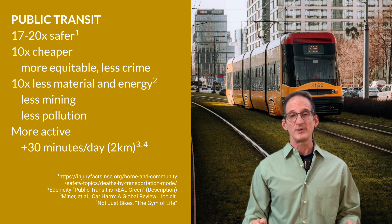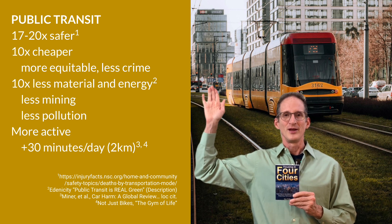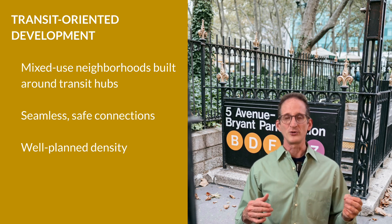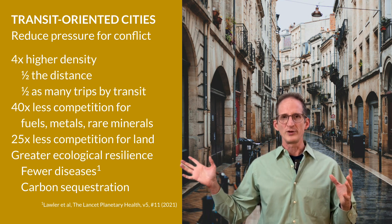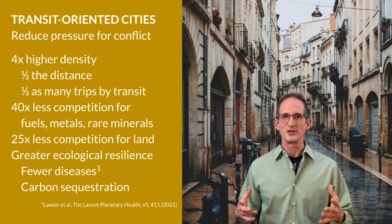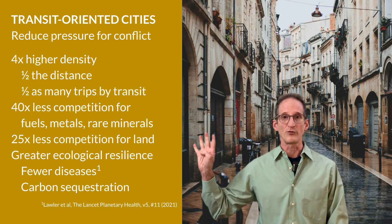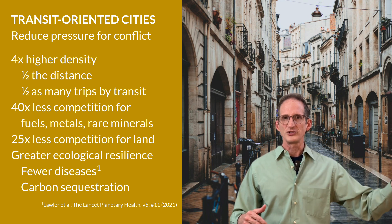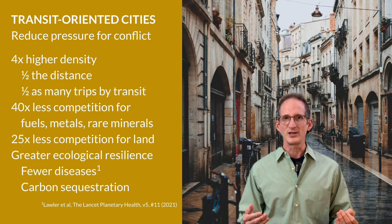Promoting public transit needn't be an afterthought — it can be deeply designed into a city to great benefit. This development pattern is called transit-oriented development. Cities that are entirely built for transit-oriented development reduce the pressure for conflict in many ways. Removing all that car and road infrastructure and putting in transit greatly reduces the land area dedicated to transportation and setbacks from the curb. This by itself can increase the density of a city fourfold, cutting distances to every destination in half and the number of trips needed in half. Combined with the efficiencies of transit over cars, we have up to 40 times less infrastructure than in a car-centric design.